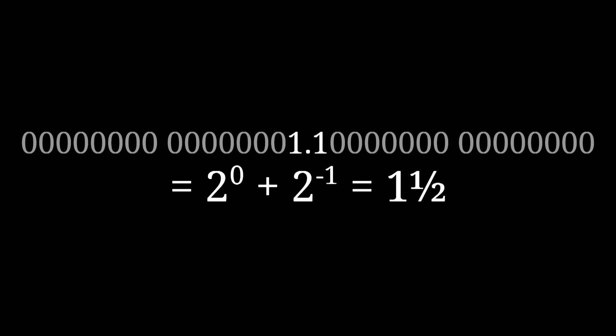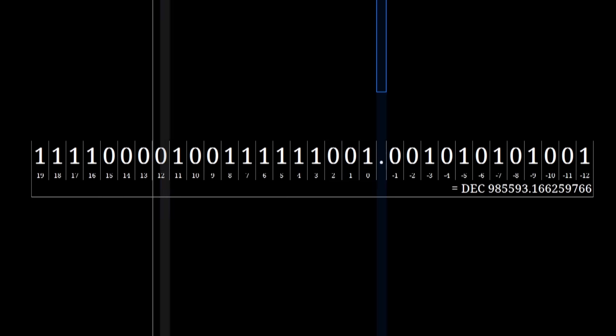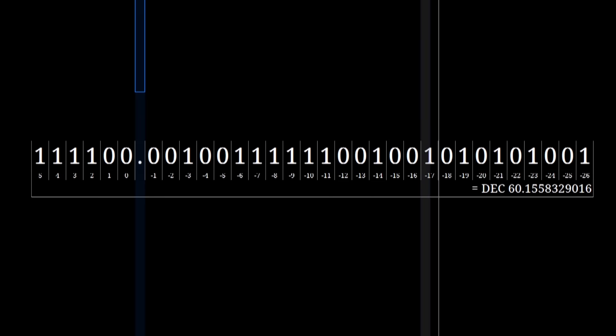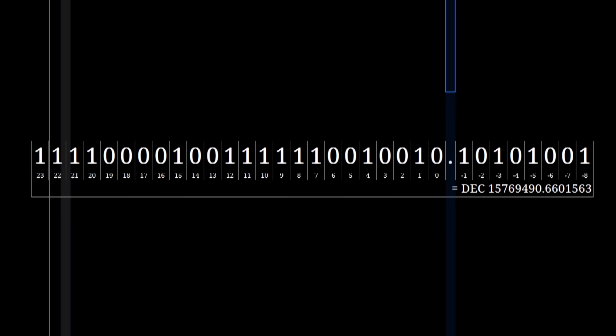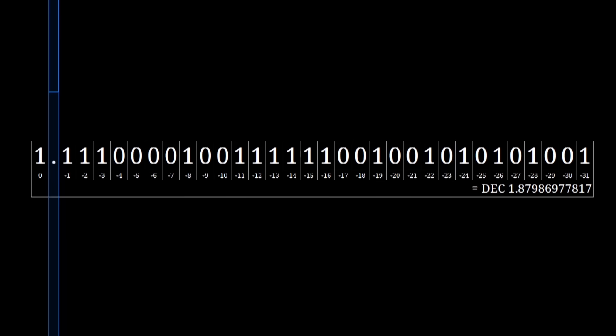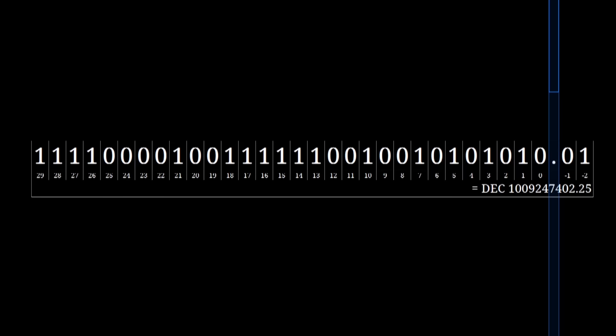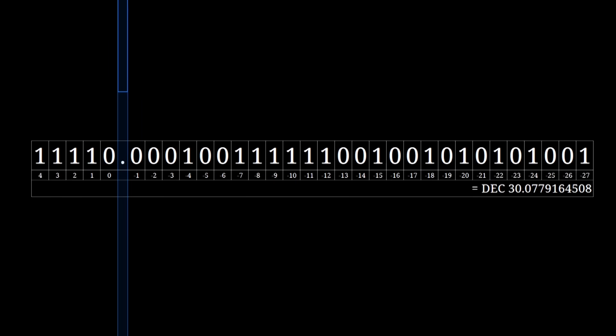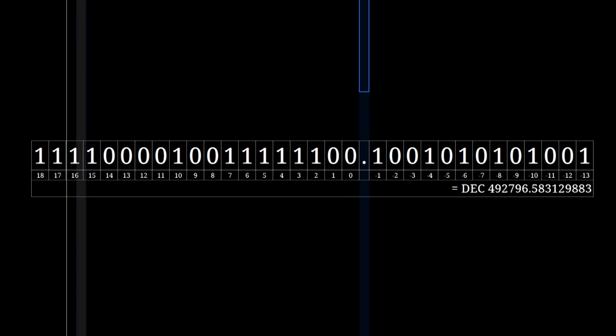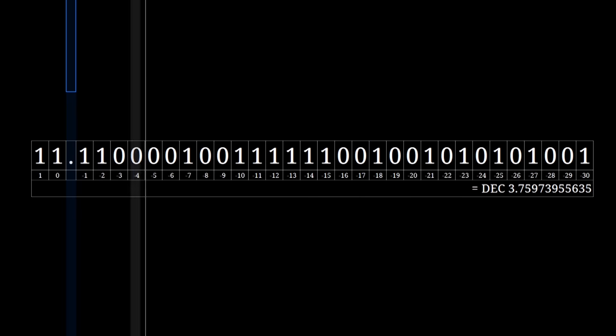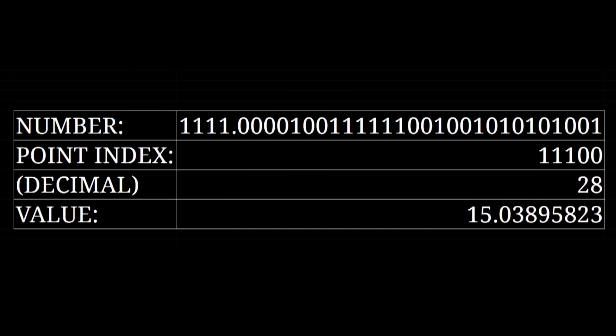And this is where we get to the first important idea behind the floating point format, and it's the idea where it gets its name from. You're thinking it too, right? Like, if we're being limited by how the computer has to always assume that the point is in the same place, what if we just tell the computer where to put the point? What if instead of being fixed in one spot, the point was free to float around and be placed anywhere in the number? So let's try it out. With 32 bits to work with, there are 31 positions between those bits where the binary point could go. With just 5 bits, we could store a number that tells the computer which of those spots to put the point. Simple.